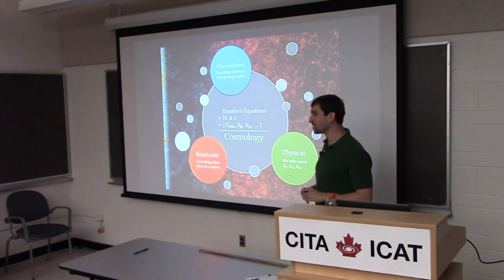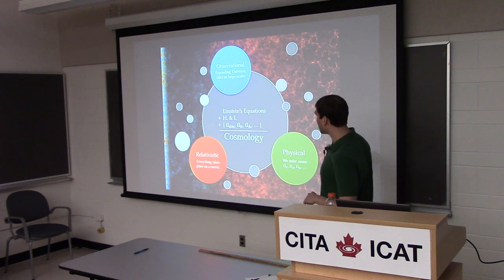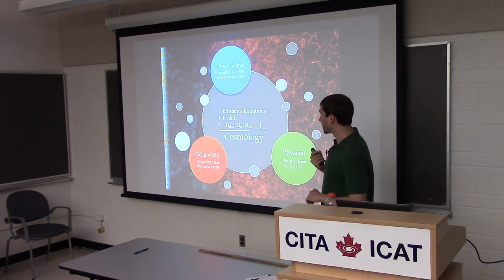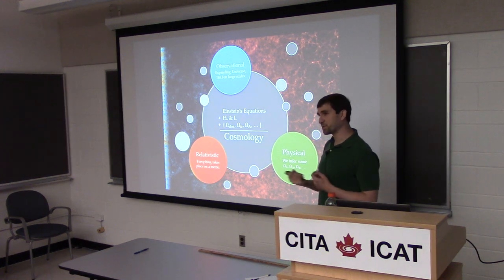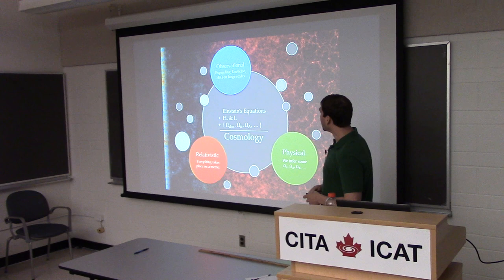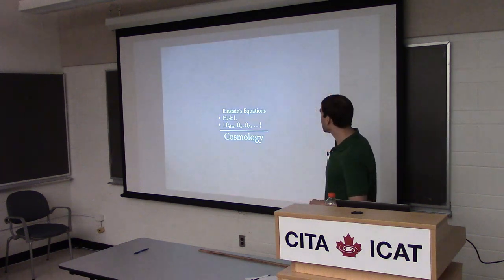Relativistic cosmology is the study of how all this matter gravitationally interacts, and also how observables — for example, photons as they propagate to us — propagate through a metric. How does this metric affect the properties of those photons or other observables? Given these three areas, we have all these ingredients that make up our standard cosmological models.